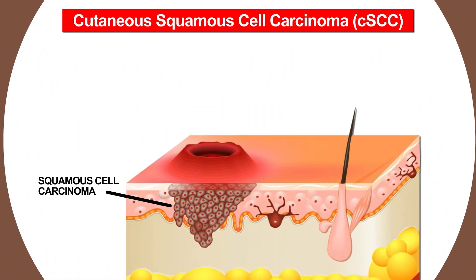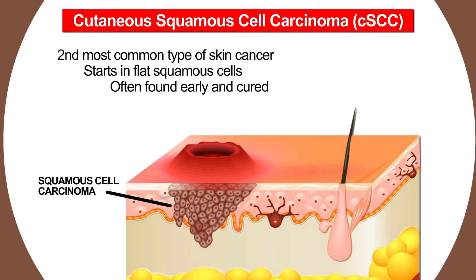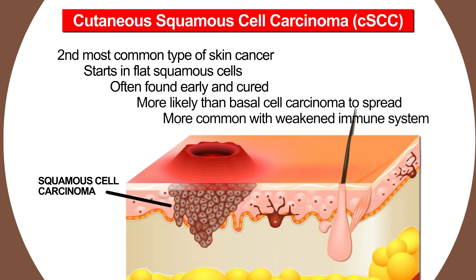Squamous cell carcinoma is the second most common type of skin cancer. It is also called cutaneous squamous cell carcinoma, so it is not confused with squamous cell cancers in other parts of the body. It starts in the flat squamous cells in the outer layer of the skin. This cancer is often found early and cured. It is slightly more likely than basal cell cancer to reach the advanced stage, and is more common among people with weaker immune systems.